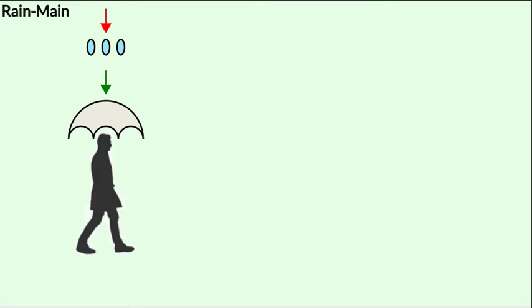The answer would be very obvious. The man would hold the umbrella vertically, that is, in the same direction as the rain. And this is shown by the green arrow.